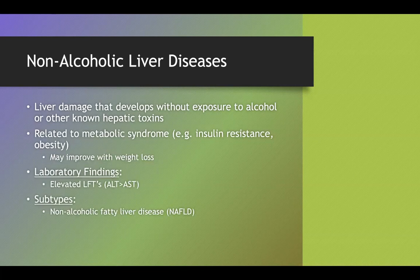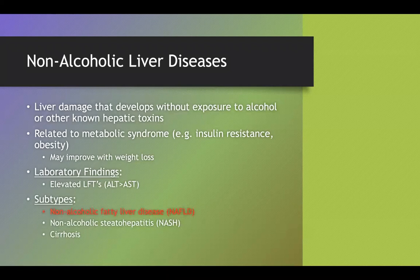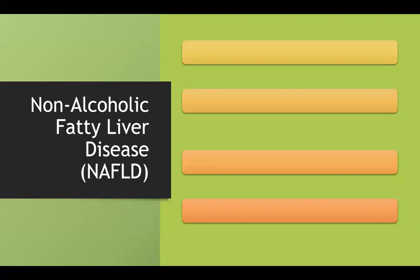There are three subtypes of non-alcoholic liver disease: non-alcoholic fatty liver disease (NAFLD), non-alcoholic steatohepatitis (NASH), and cirrhosis as the end stage. Let's break down each, starting with NAFLD, which is the initial stage and can progress to the other two subtypes.